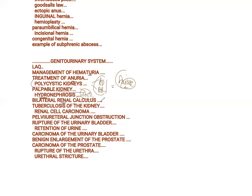Bilateral renal calculus — there are three types of stones: calcium stones, phosphate stones, struvite stones, and cysteine stones. It depends upon the metabolic defect. All these stones are going to produce obstruction ultimately.